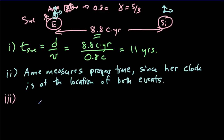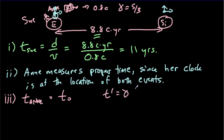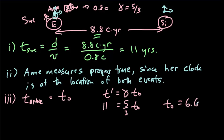Question III: we're asked to find the time as seen by Ann, which is the proper time. Since the dilated time equals gamma times the proper time, the dilated time is that of Sue — that's 11 years. Gamma here is 5/3, so we can work out what T-naught is and we should get 6.6 years for Ann.